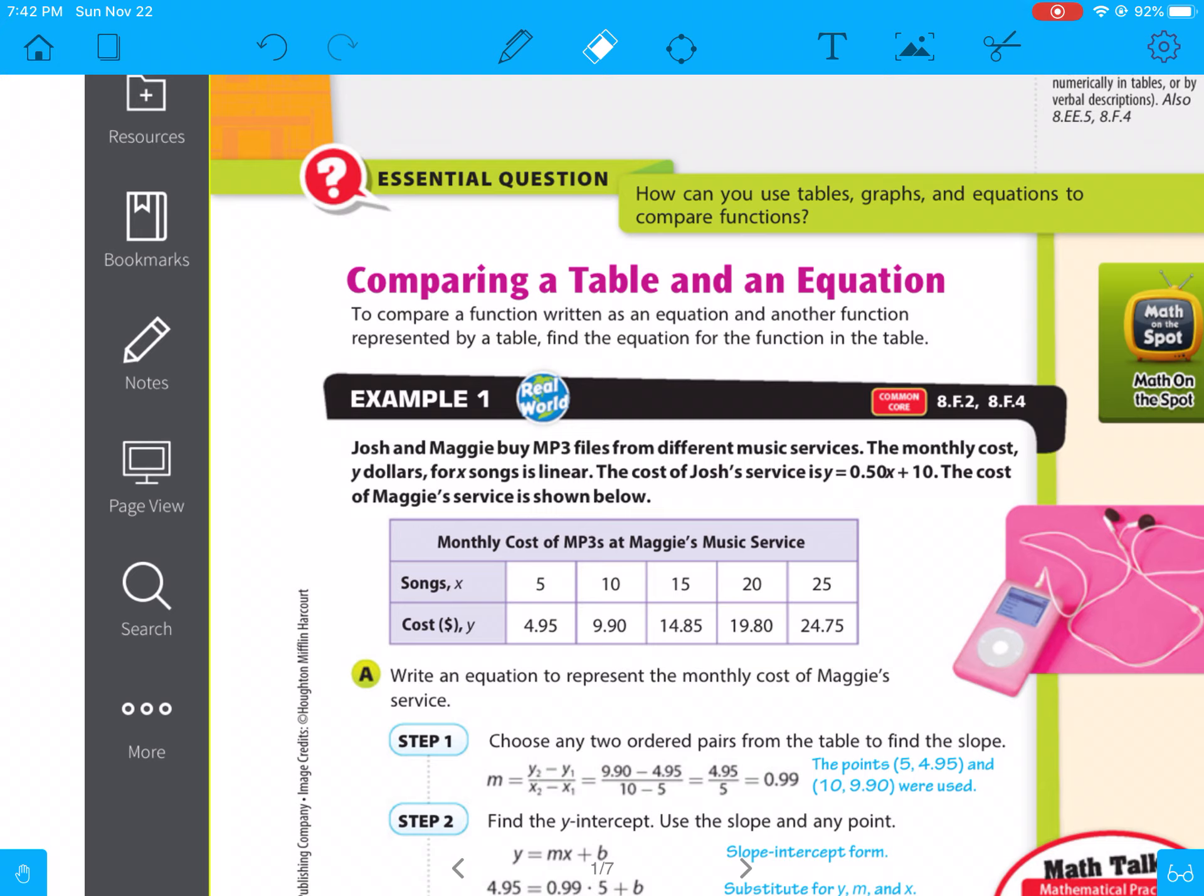So here it says, Josh and Maggie buy mp3 files from different music services. The monthly cost, y dollars, for x songs is linear. The cost of Josh's service is y equals 0.5x plus 10, which with this y equals 0.5x, that means it's 50 cents per song, plus $10 to join the club.